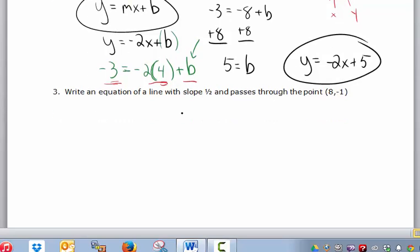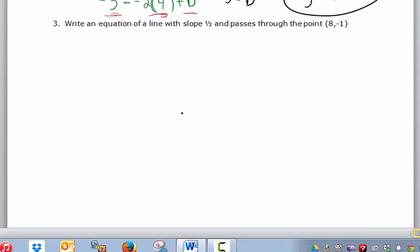One more. The third problem in this video is very similar, we have the given slope. Remember whenever you're watching these videos, if you want, press pause, try and do it on your own, do it on some paper, and then watch the rest of it, see if you get the same answer. Slope 1 half, passing through the point (8, -1), so just be careful, the y value is negative 1.